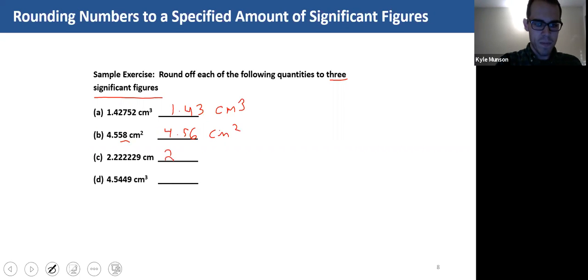Another example, this is going to be 2.22 cm. That two is not greater than five, so we leave the digit before it unchanged.